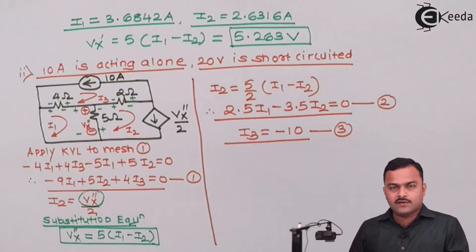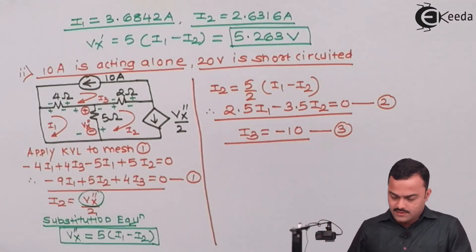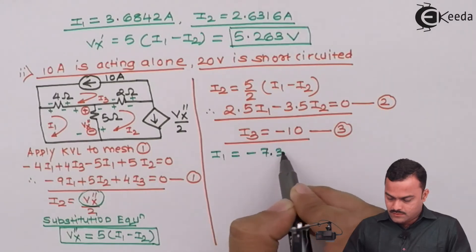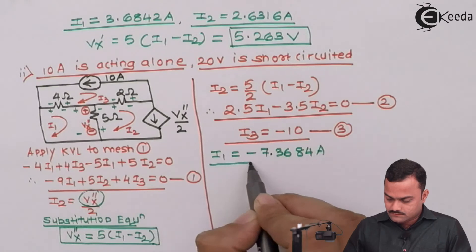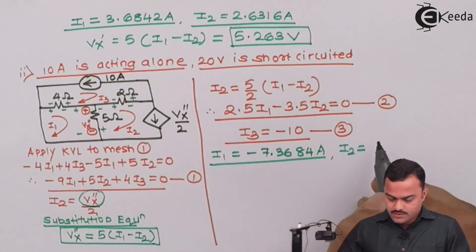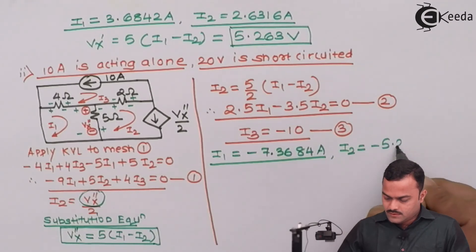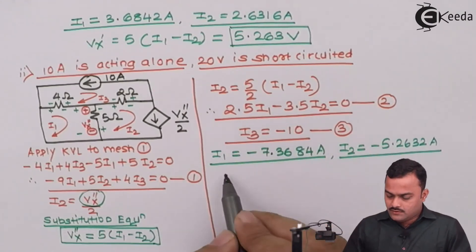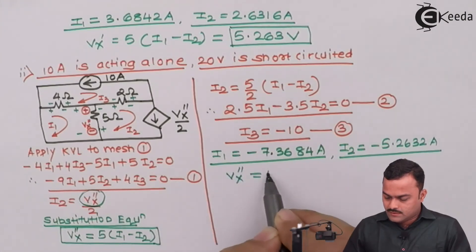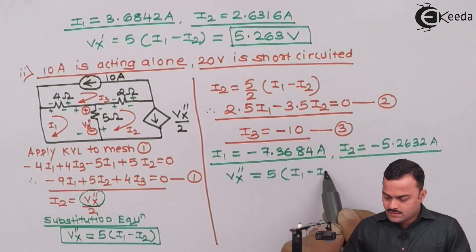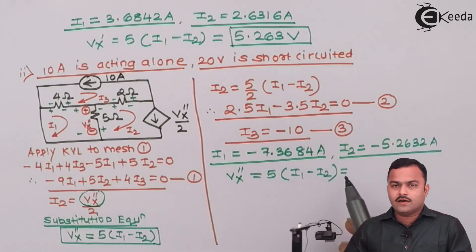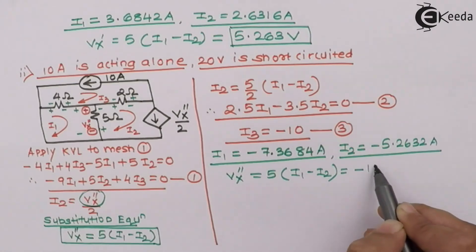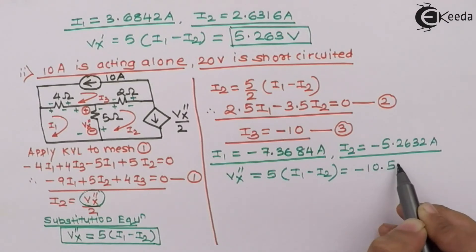With three equations and three unknowns, we get: I1 equals minus 7.3684 amperes and I2 equals minus 5.2632 amperes (I3 is obviously minus 10 amperes). We want Vx double dash, which is 5·(I1 minus I2). Substituting the values gives Vx double dash equal to minus 10.526 volts.